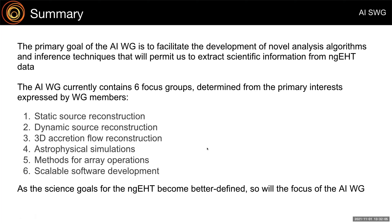The big question right now for the NGEHT is what's the array going to look like, and how is that going to optimize the science downstream? I think the array operations focus group — number five — is really invested most heavily in that question. Do you see things like the dynamic source reconstruction or astrophysical simulations maturing sufficiently to bear on the work from your fifth subgroup? A very clear and cogent definition of the science priorities ought to be the natural input into the metrics that determine what the optimal array looks like.